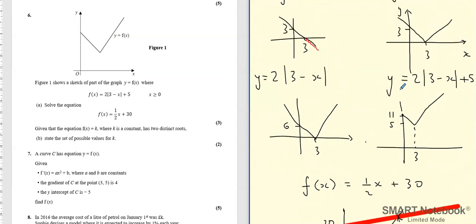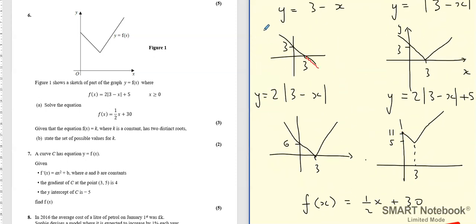Now what's important to realize is that this was 3 minus x. This part of the line is still 3 minus x. This now has become minus 3 plus x. When I multiply by 2 I get 6 minus 2x and this is going to become minus 6 plus 2x.